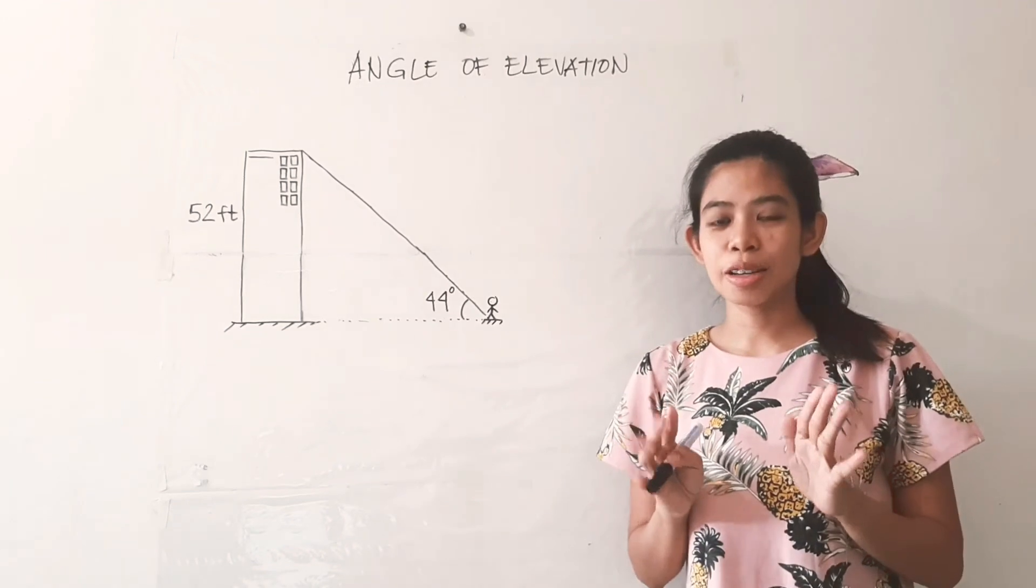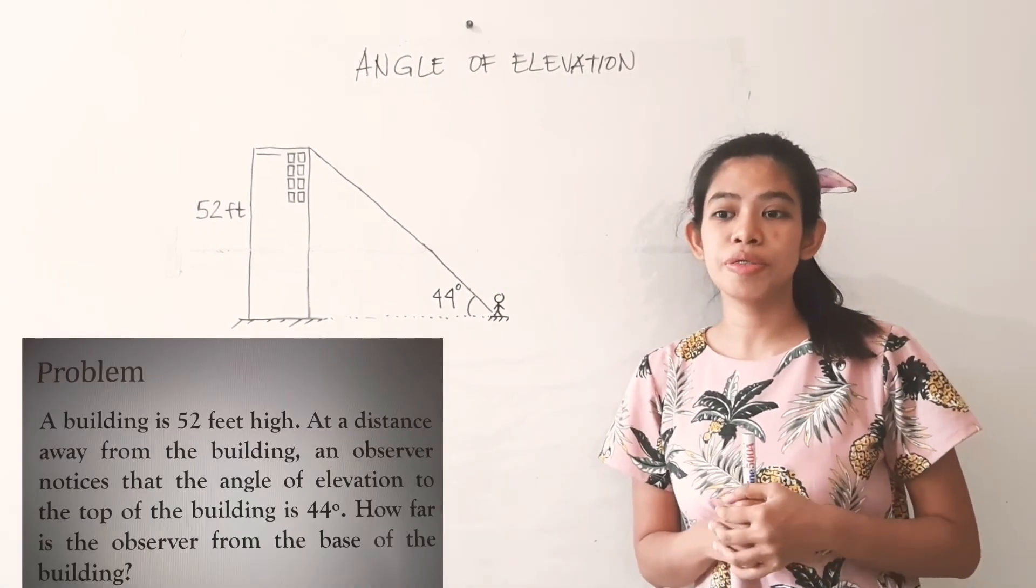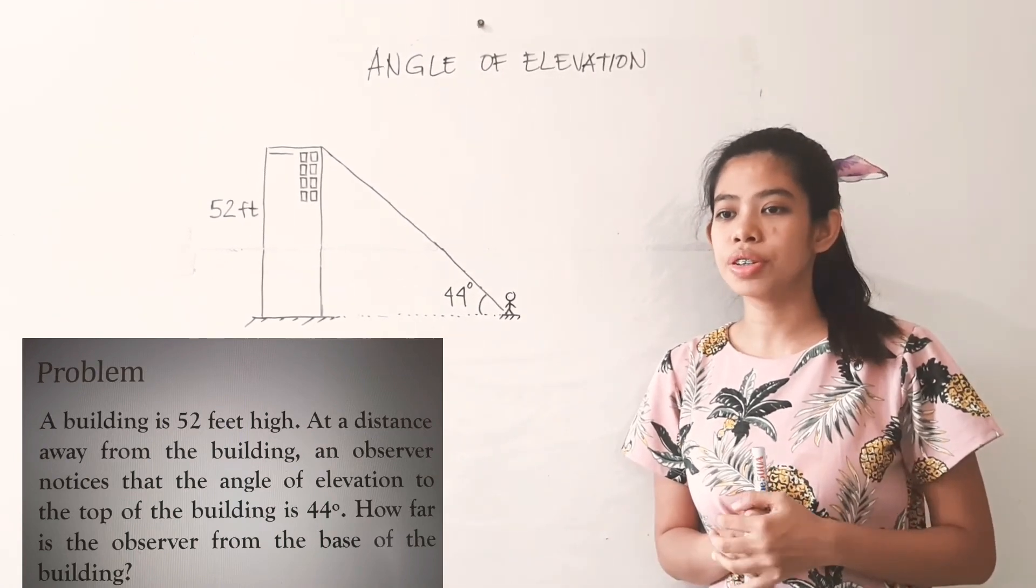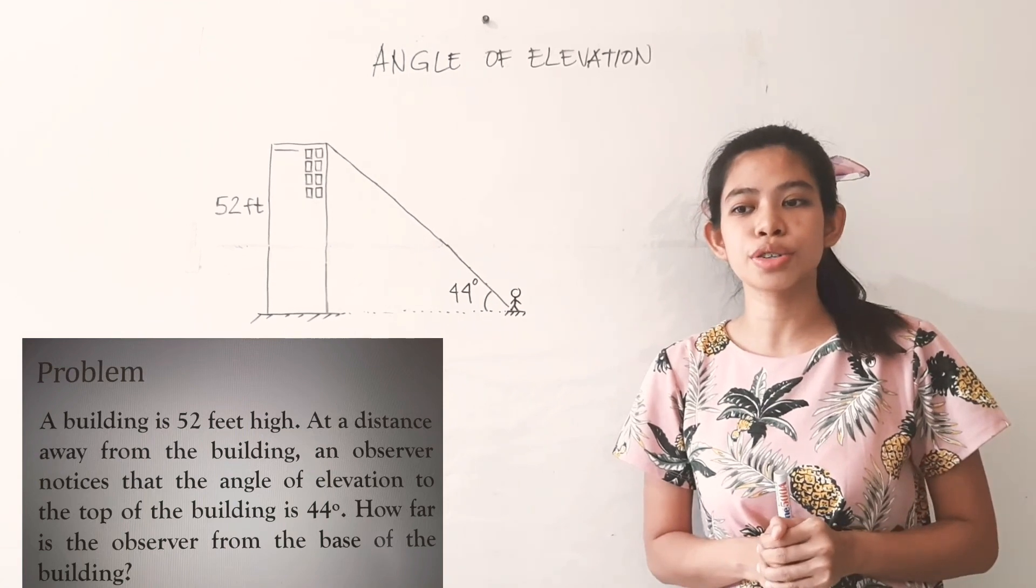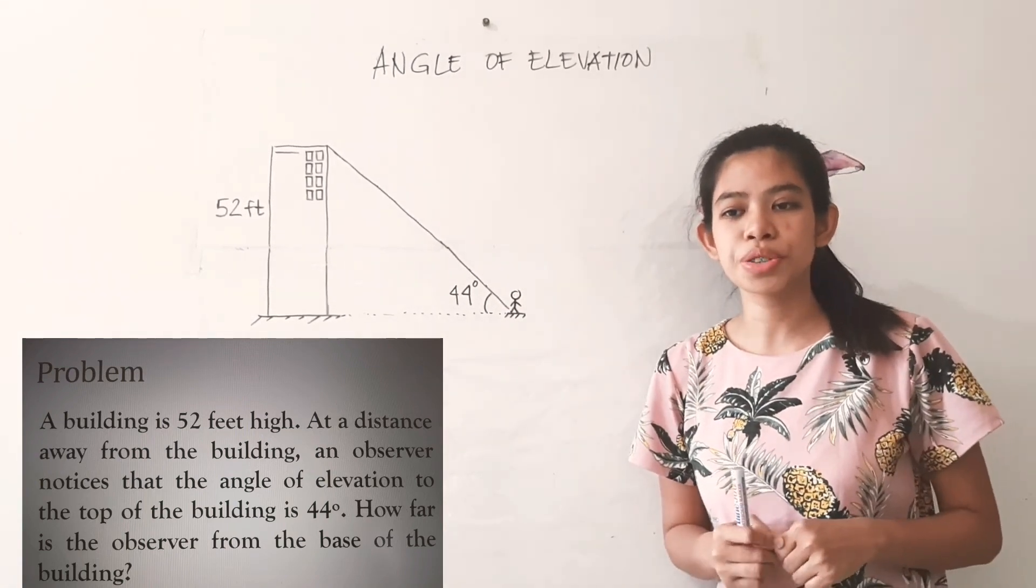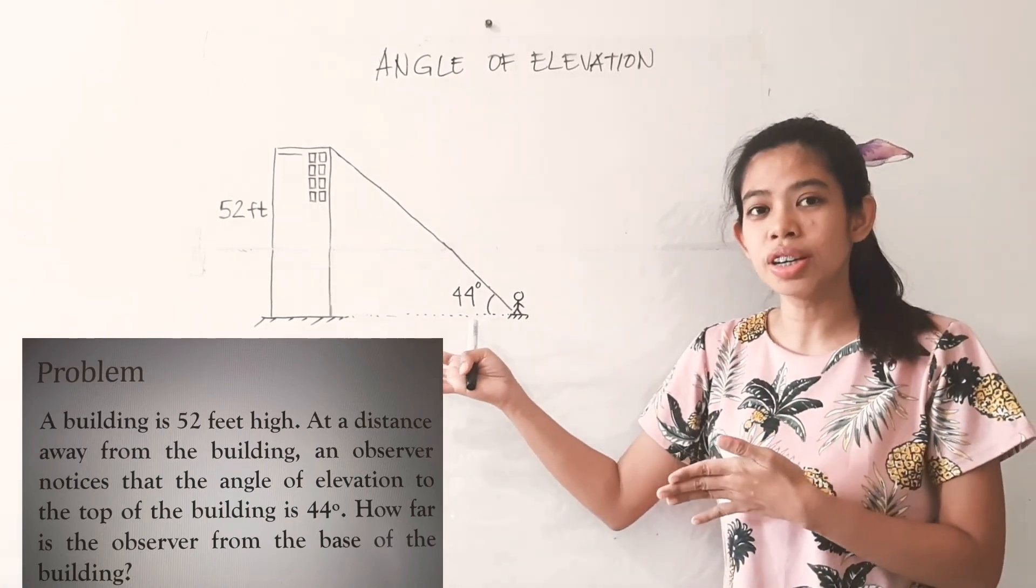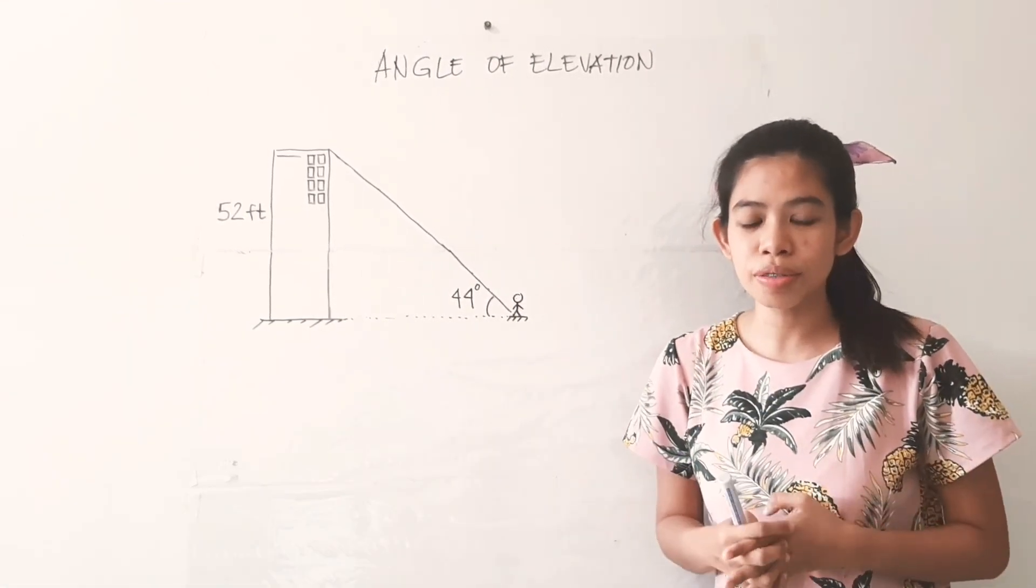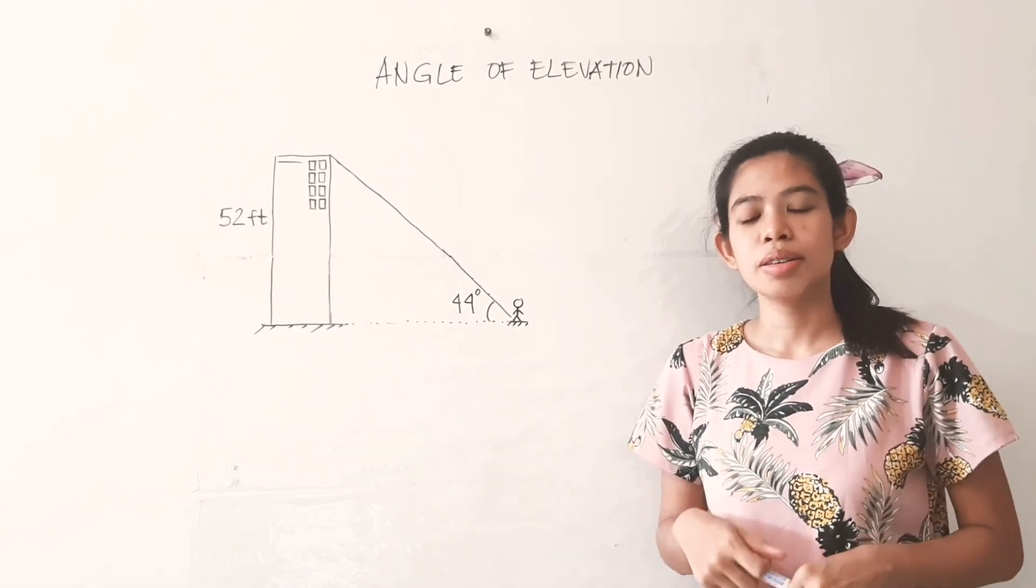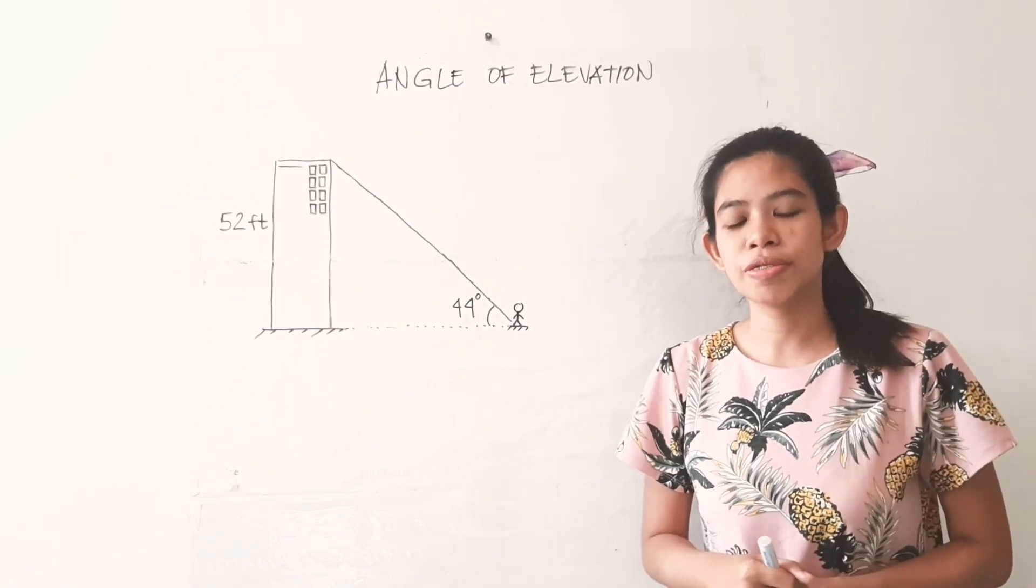So again, I'm going to give you an activity to be solved at home. So suppose a building is 52 feet high, and a distance away from the building, an observer notices that the angle of elevation to the top of the building is 44 degrees. How far is the observer from the base of the building? Okay, so here's an illustration for you. Gagin mo na lang ay mag-solve. I hope you would try on your own, and you may send me your answers. Goodbye, and God bless you. I hope you are fine.